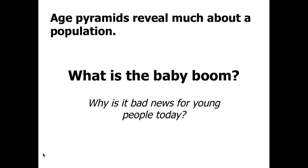One tool ecologists use are age pyramids, which look like sideways bar graphs, and they reveal a lot about how a population is growing. We can track things like baby booms through them — you've probably heard of the baby boomers, people born in the late 50s to early 60s who are now at or just past retirement age. There are problems associated with health care and payout of social security.